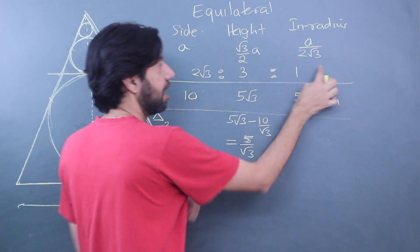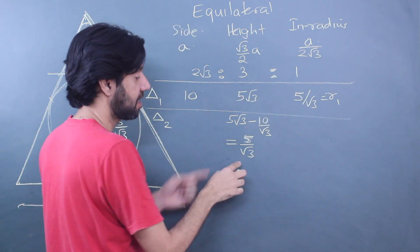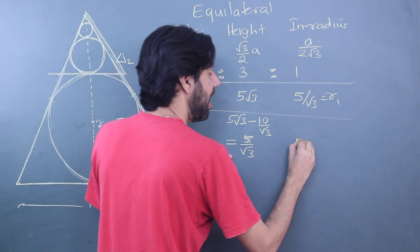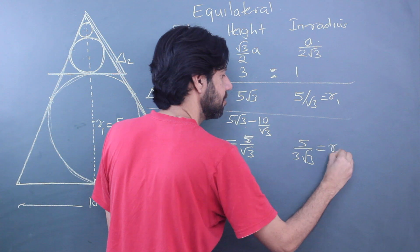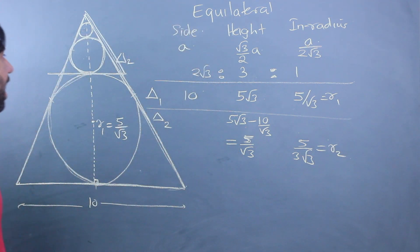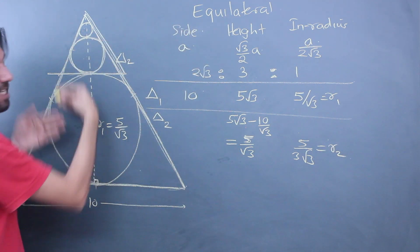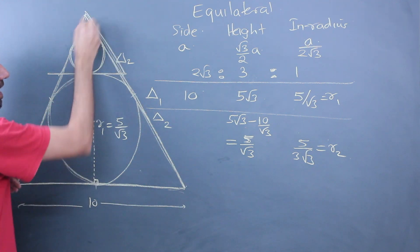If the height is 5/√3, the inradius will be one-third of it. So r2 is going to be 5/(3√3). And I had already said: now that you have done the relation between the first triangle and the second triangle...